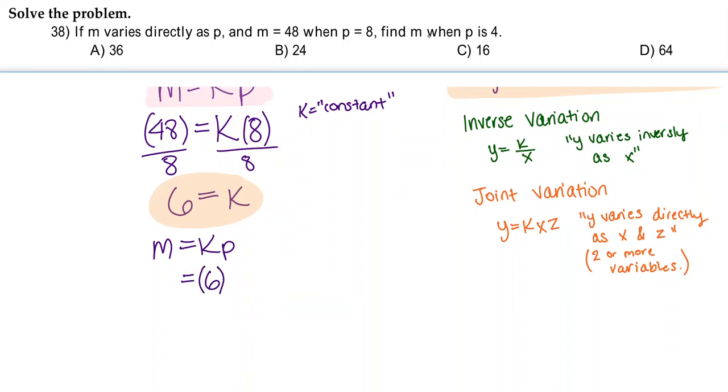And then we're trying to find m, so we don't know what m is yet, but we do know what p is now, which is 4. So we're just going to substitute 4 in for p, and then we're going to solve for m. 6 times 4 is 24. So our m is 24.